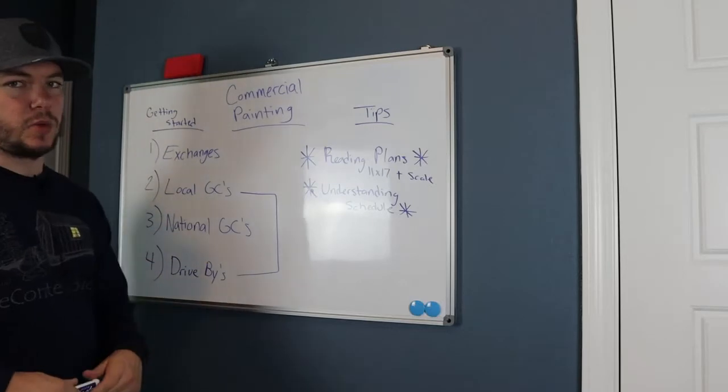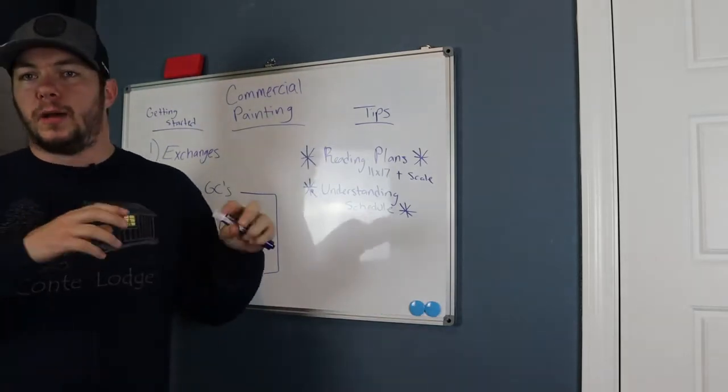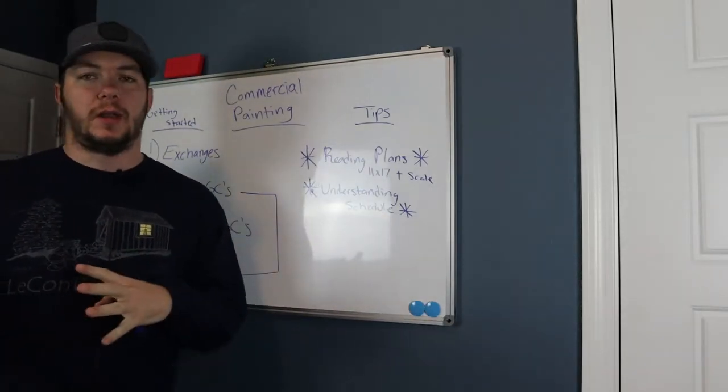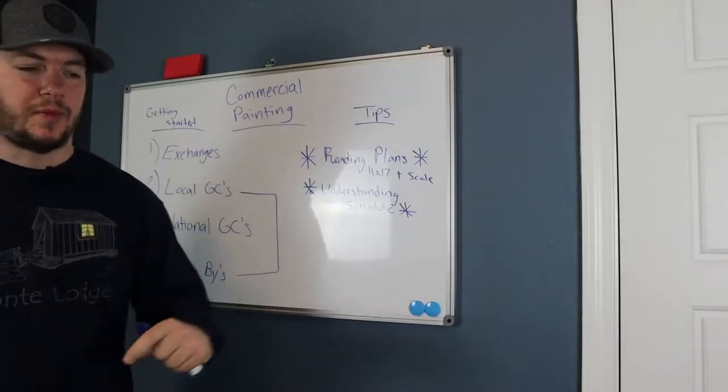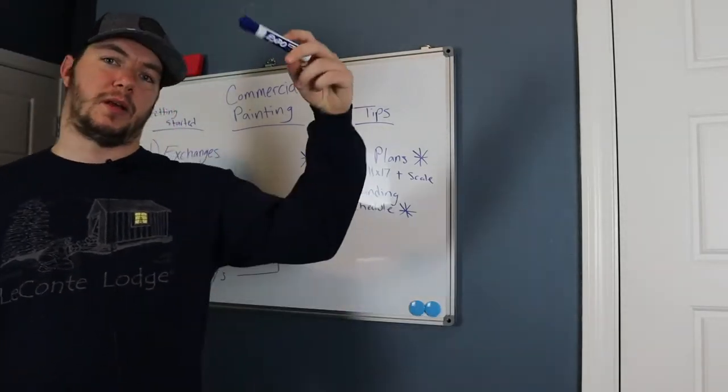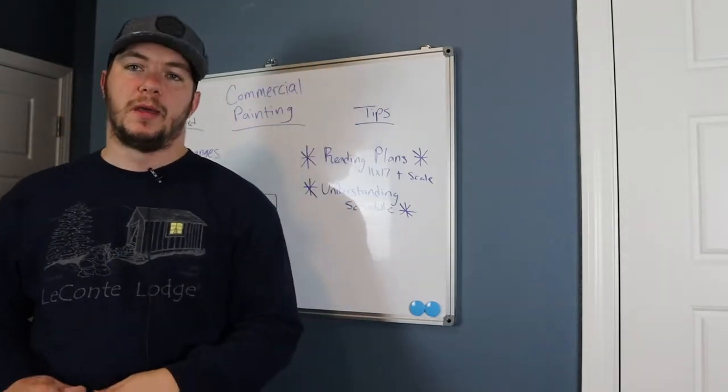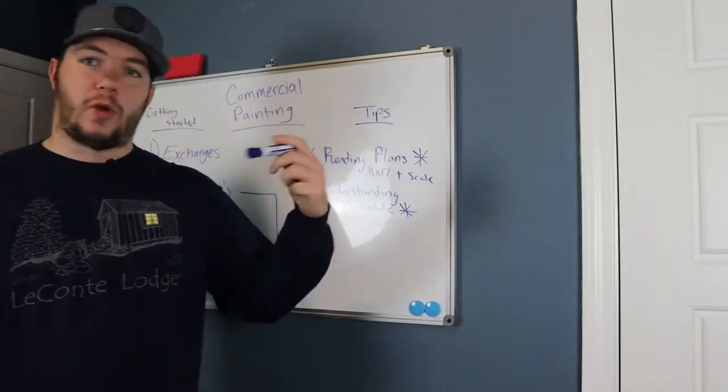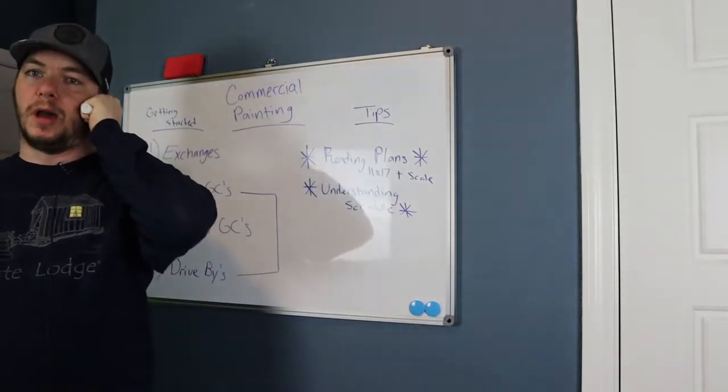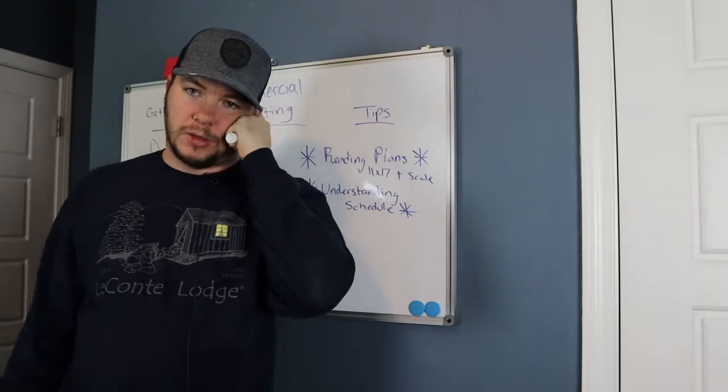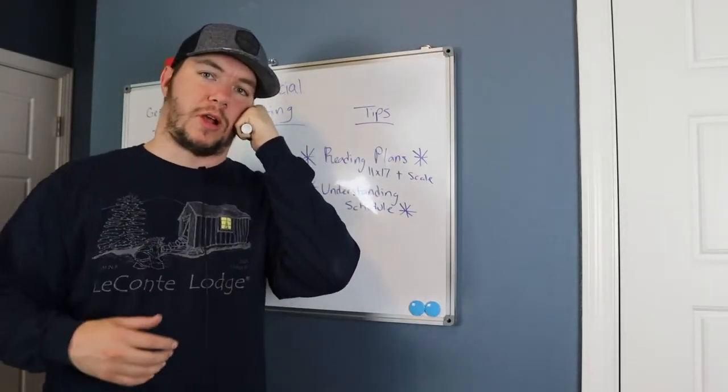Local GCs is pretty self-explanatory. Google whatever city you live in, general contractor. So if you live in Phoenix, type Phoenix general contractor. You'll see a big list of general contractors depending on how big the city is. Start calling them. Hey, I'm a painter, licensed and insured. I'd like to get on your bid list. Sure, what's your email address? You give them your company email address.